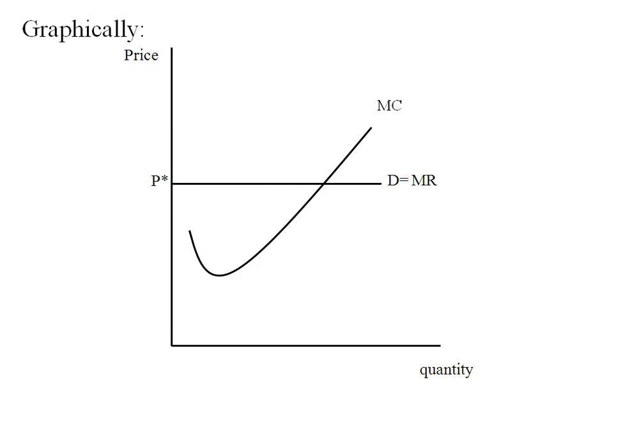Our rule says they produce where marginal revenue and marginal cost are equal, and that happens where those two curves intersect. I'm going to call that Q star.